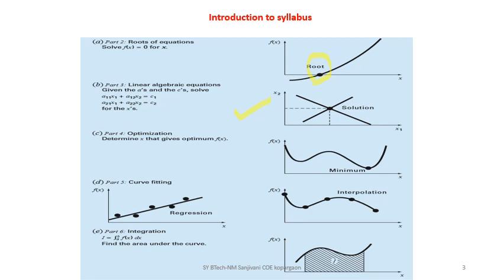In the chapter on curve fitting, we are going to find how you can fit a curve between the scattered points typically obtained after experimentation. In interpolation, we will learn how to join these experimental data points efficiently with minimum error possible.